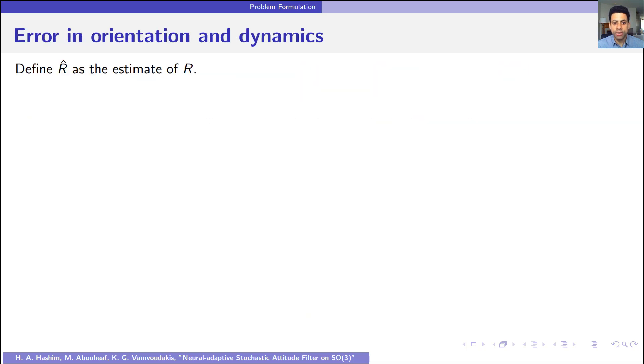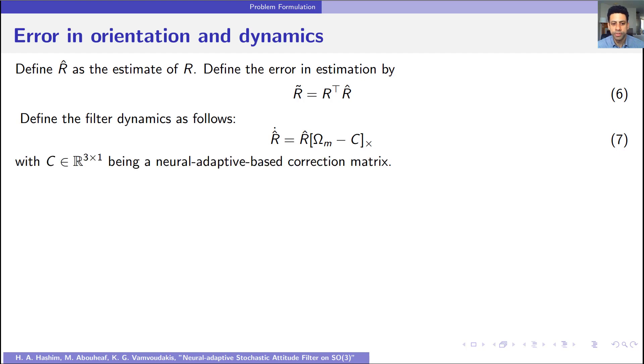Now let us define the estimate of the orientation as R hat. Let us define the error in estimation as R tilde equal R transpose R hat. Our objective is R tilde goes to the identity matrix. Let us define the filter dynamics as follows: R hat dot equal R hat multiplied by skew symmetric of omega M minus C, where C is a neural adaptive based correction matrix which will be designed later.